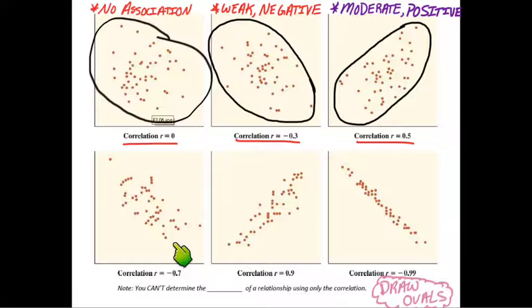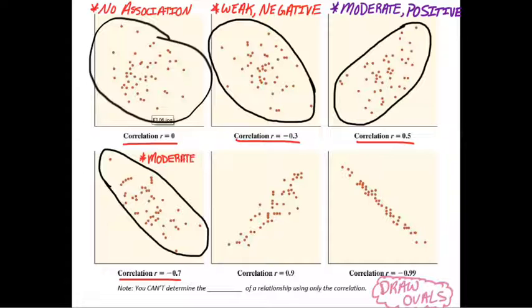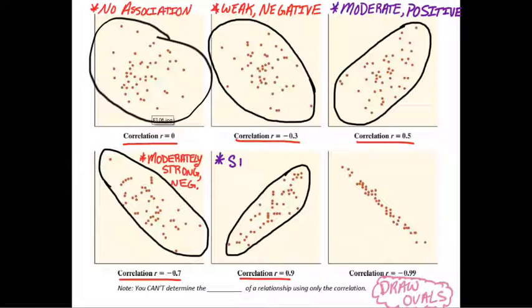r equals negative 0.7. Now it's starting to be really obvious. I would call that a moderately strong negative trend. r equals 0.9. That's becoming really linear, a really tight grouping. I would just call that strong positive.